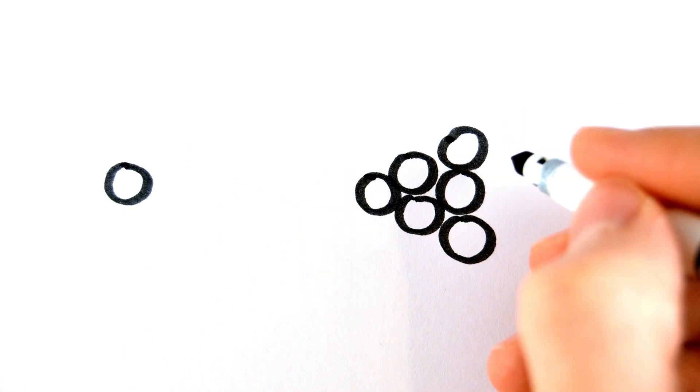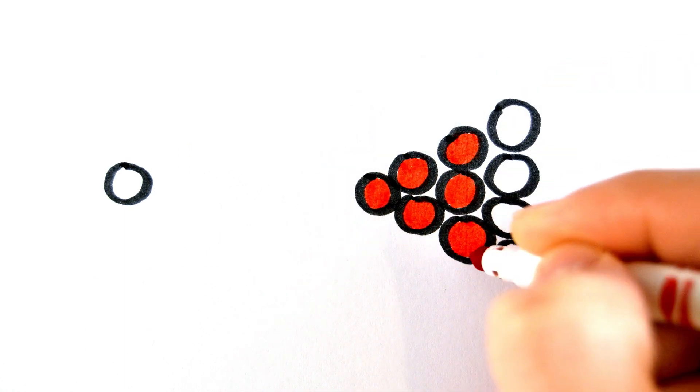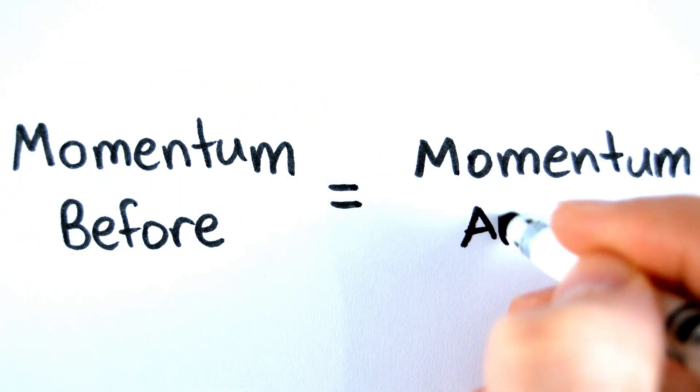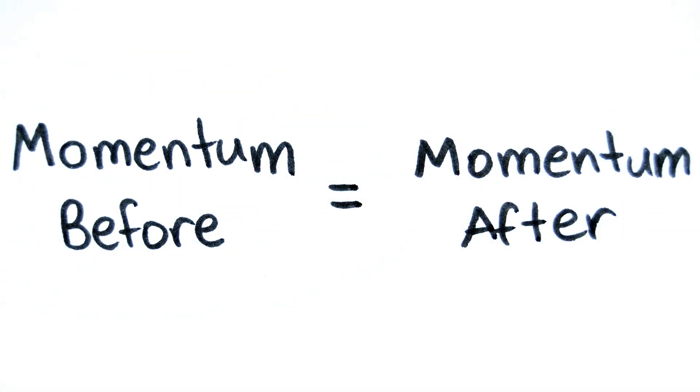The idea of conservation of momentum can be used to work out what will happen when two things collide. Conservation of momentum states that the total momentum of a closed system is constant. This means that the total momentum before a collision is equal to the total momentum after the collision.